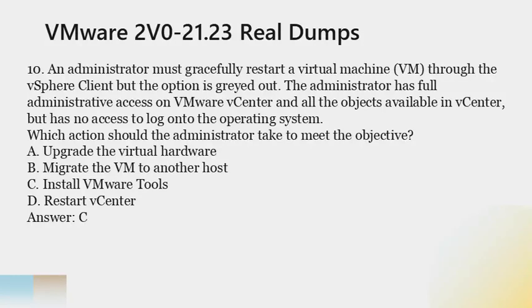Question 10. An administrator must gracefully restart a virtual machine (VM) through the vSphere client but the option is grayed out. The administrator has full administrative access on VMware vCenter and all the objects available in vCenter, but has no access to log onto the operating system. Which action should the administrator take to meet the objective? A. Upgrade the virtual hardware. B. Migrate the VM to another host. C. Install VMware Tools. D. Restart vCenter. Answer: C.